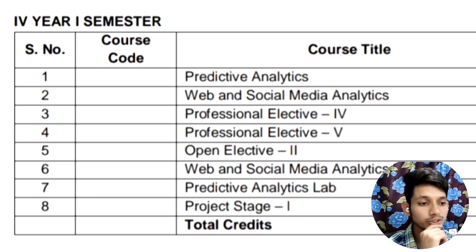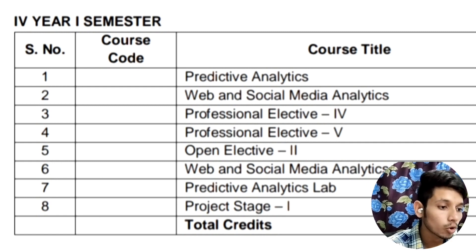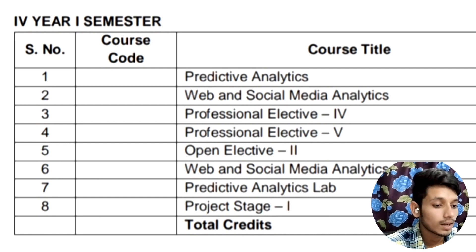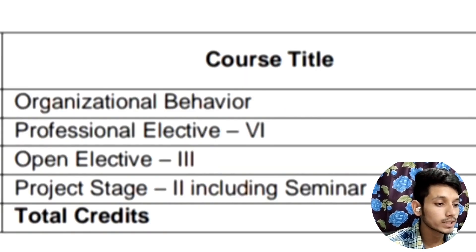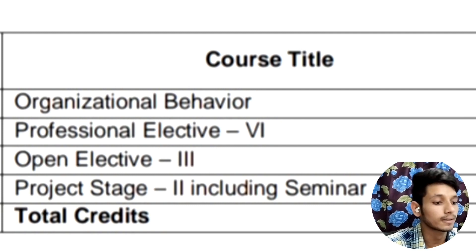In the first semester of fourth year, the subjects will be Predictive Analysis, Web and Social Media Analytics, Professional Elective 4, Professional Elective 5, and Open Elective 2, along with a Stage 1 project. In the second semester of fourth year, you will be having only three subjects: Organizational Behavior, Professional Elective 6, and Open Elective 3, along with a Stage 2 project including a Seminar.